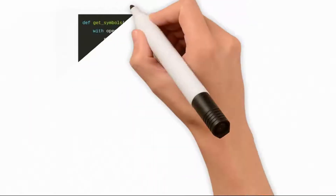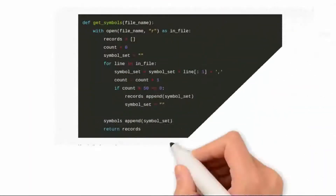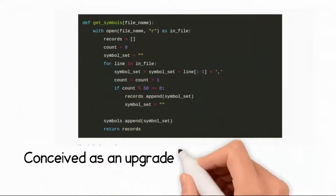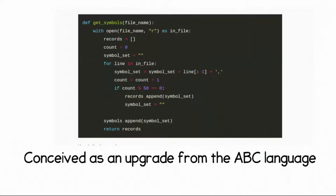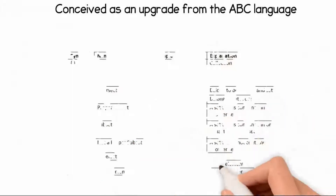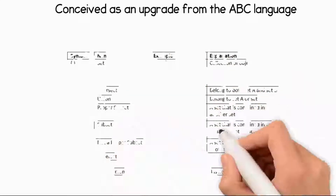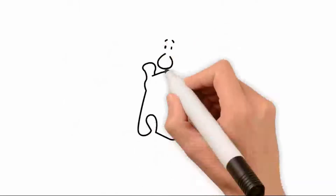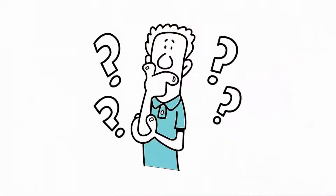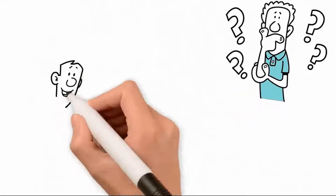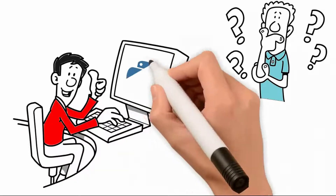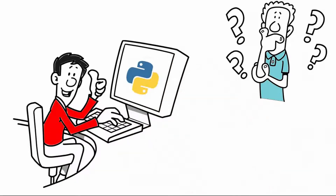Python was designed to emphasize code readability and was conceived as an upgrade from the ABC language, which was inspired by the complex mathematical language of sets called SETL. What most people don't know is that Python was initially a hobby project for Guido van Rossum, to keep himself from boredom during the Christmas season.